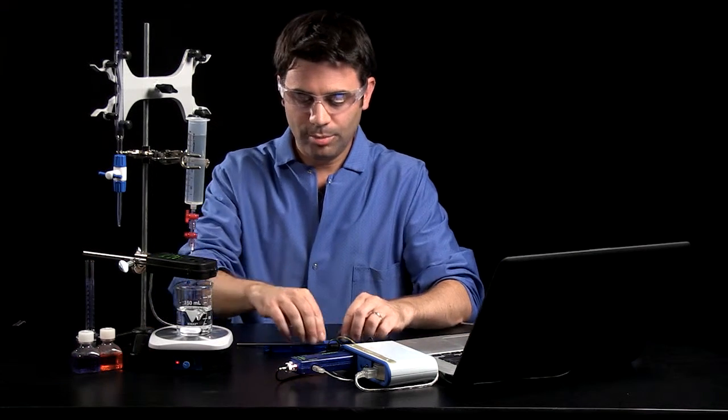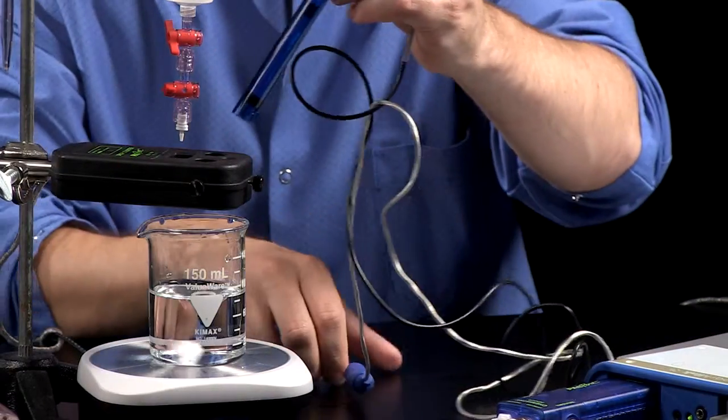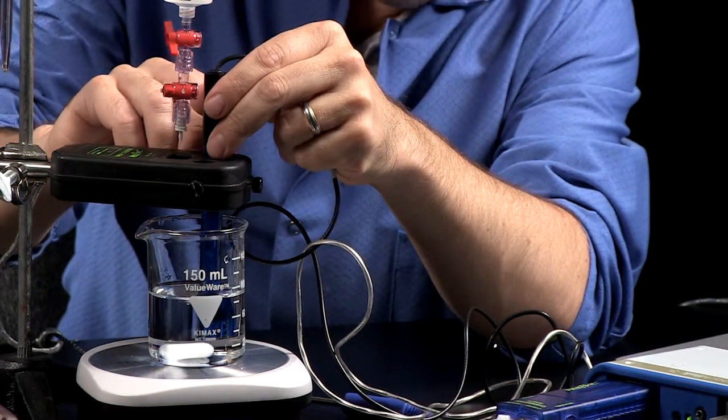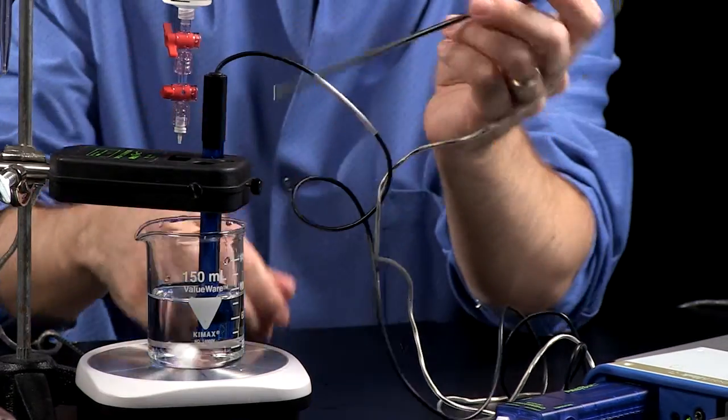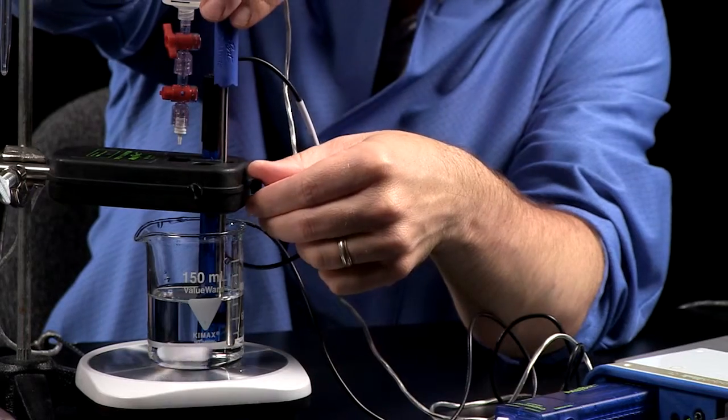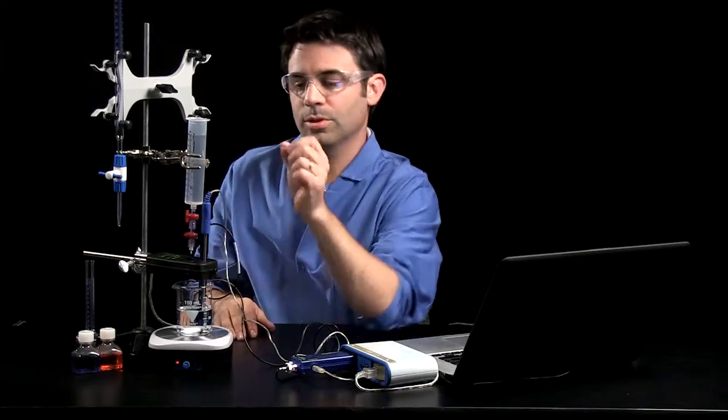So now my measurements are set up, and I need to set up my probes. So I'm going to put in my pH sensor, and I want to put it in far enough so that it doesn't hit the stir, and in this case, I'm also going to put in my temperature sensor. I'm taking advantage of the drop counter's multiple sensor ports. There are three ports on here.